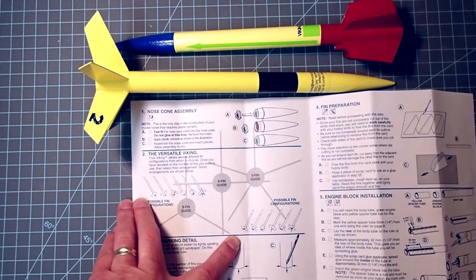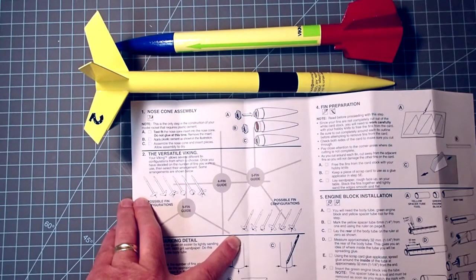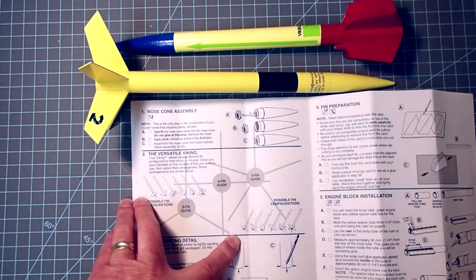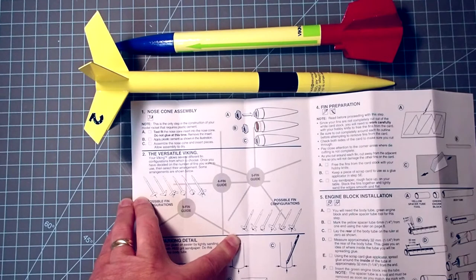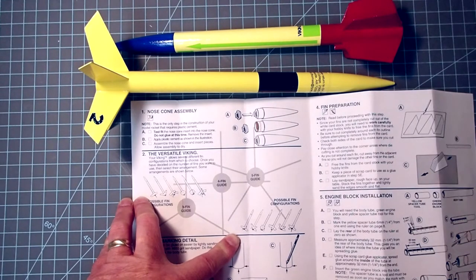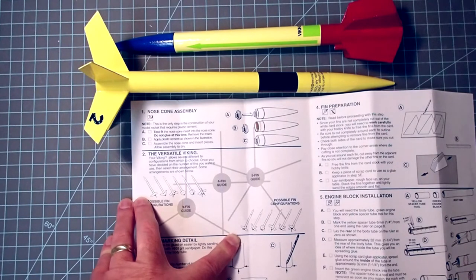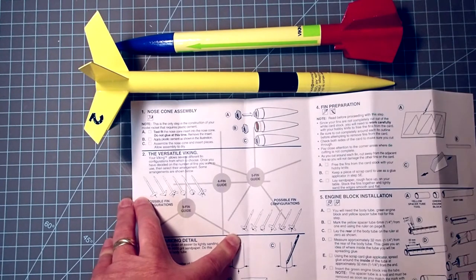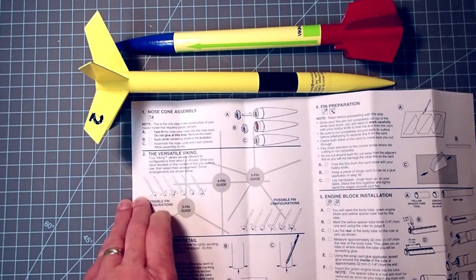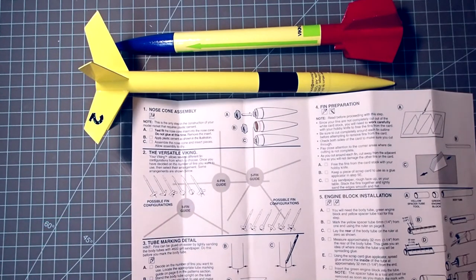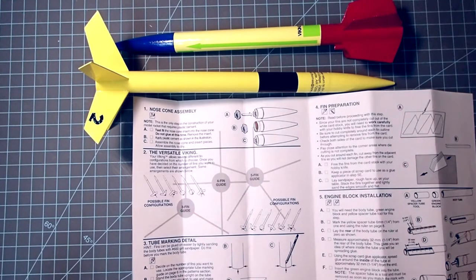Now, they do recommend that you always keep your fins going all in the same direction to maintain stability. But there are even possibilities of using multiple fin configurations on the same rocket. And they can still be stable, although you do need to make sure and check that before flying them. So there are at least 18 different configurations, more than what are shown here.